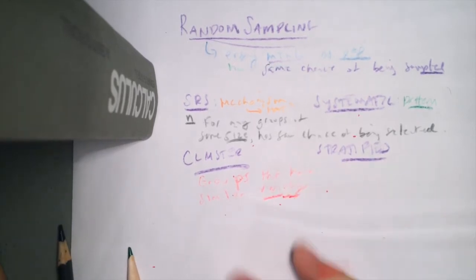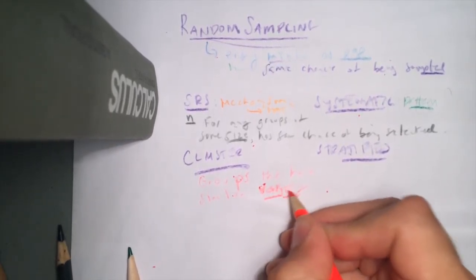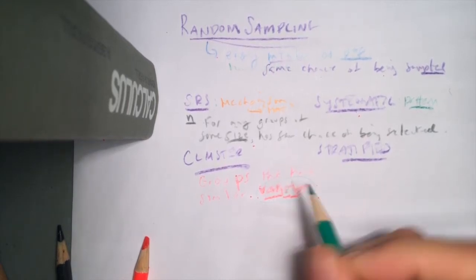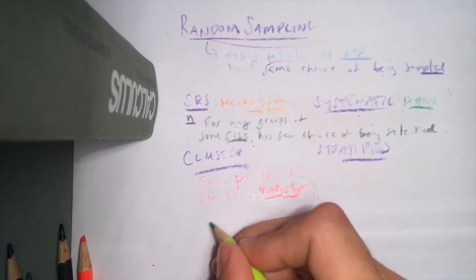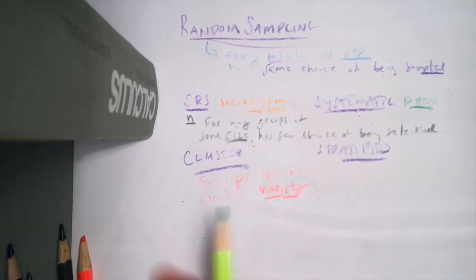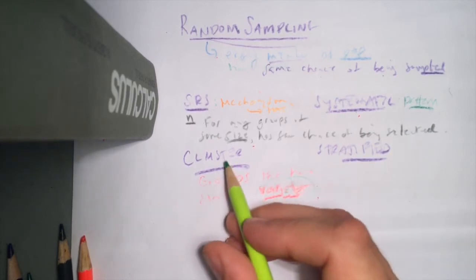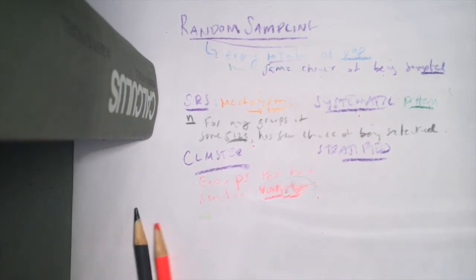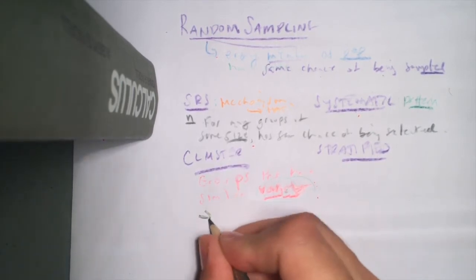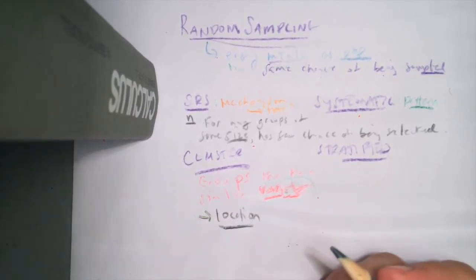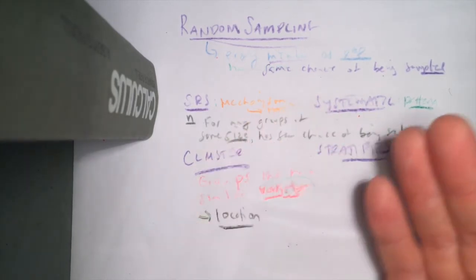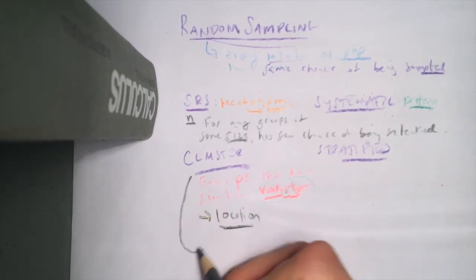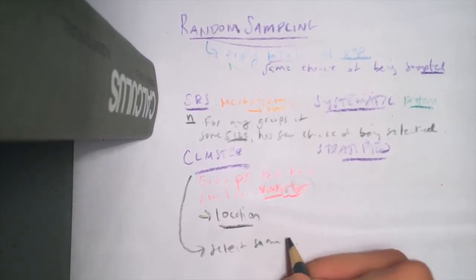The groups in cluster sampling have similar variety — in other words, the variety that exists in the population also seems to exist within each individual group. Each group of the population is itself a kind of microcosm of the whole population. These clusters frequently arise from location — for instance, zip codes — where the groups of individuals in one zip code are often similar in variety to those in another zip code.